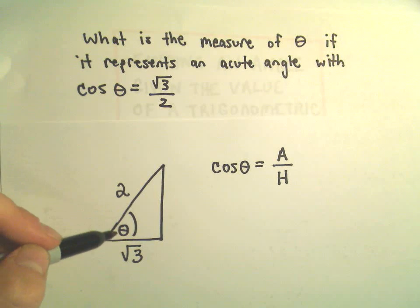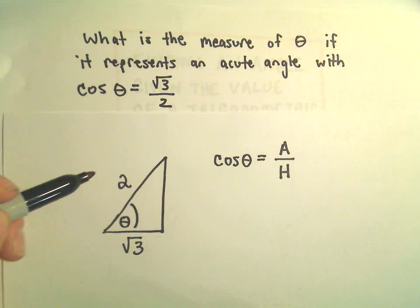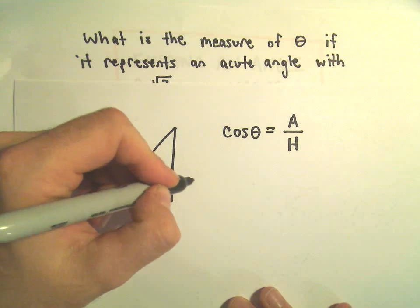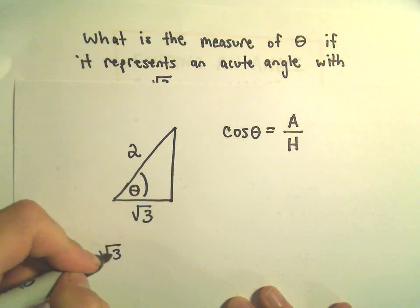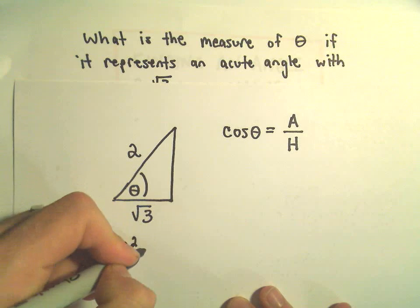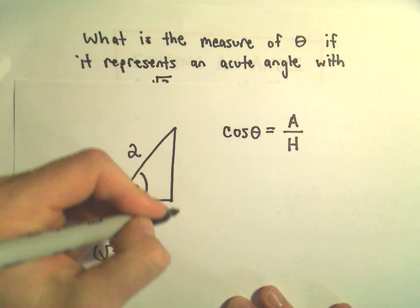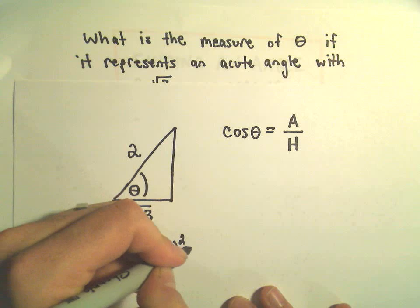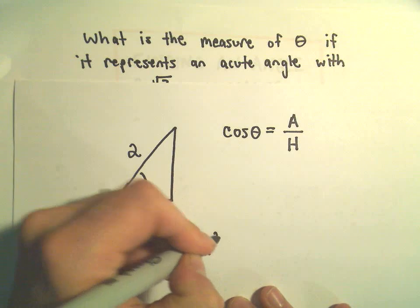You may know this from geometry, but we can always figure it out just using Pythagorean theorem. So we'll take the square root of 3 squared, plus this missing side, we'll call it b squared, that equals 2 squared.